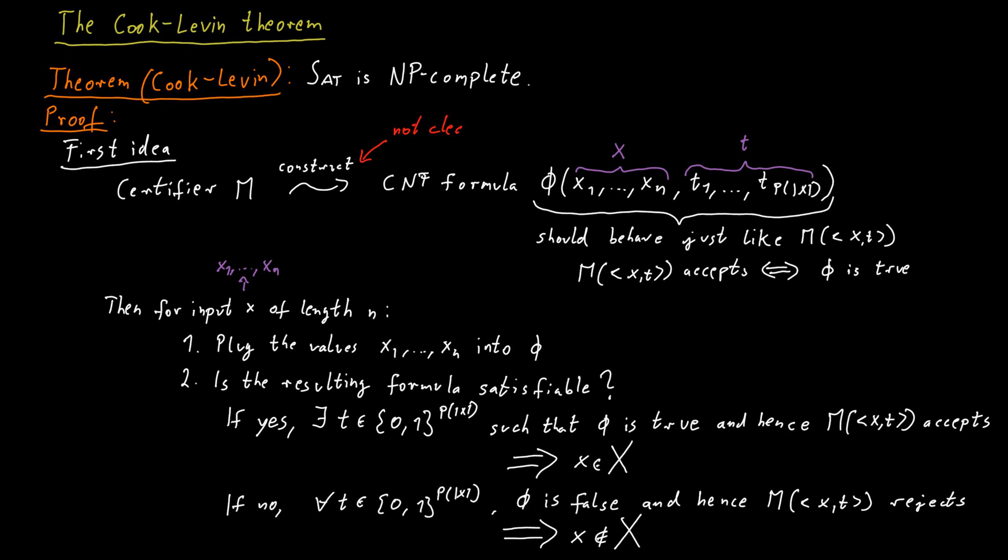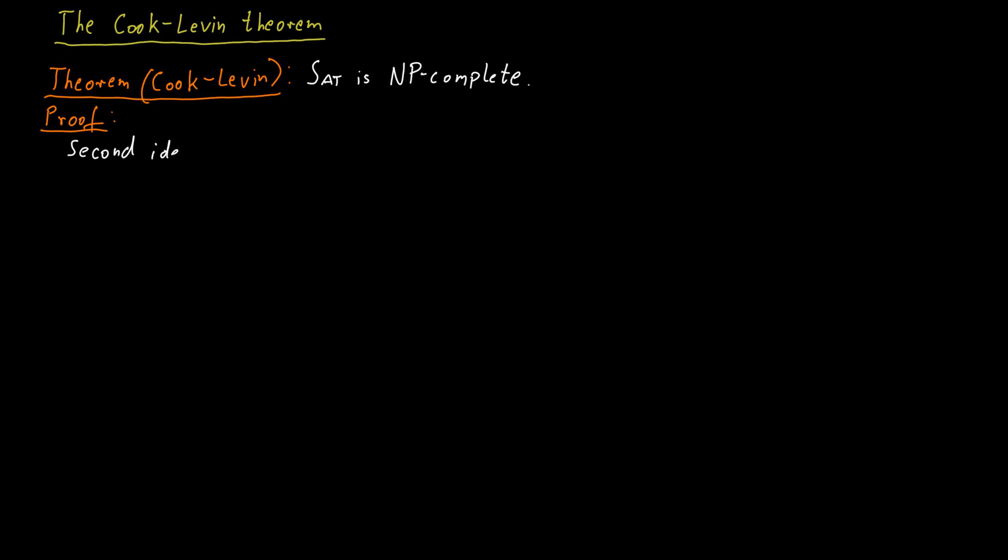Unfortunately though, it is quite difficult to see how to construct such a formula directly. So we will do something that is seemingly a bit more complicated. So far, our idea has been to construct a Boolean formula that captures the output behavior of our Turing machine, of our certifier.